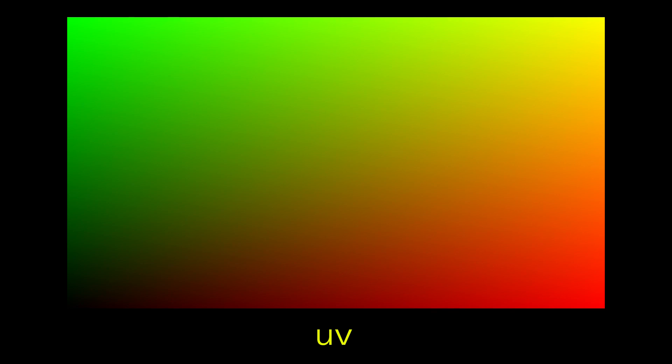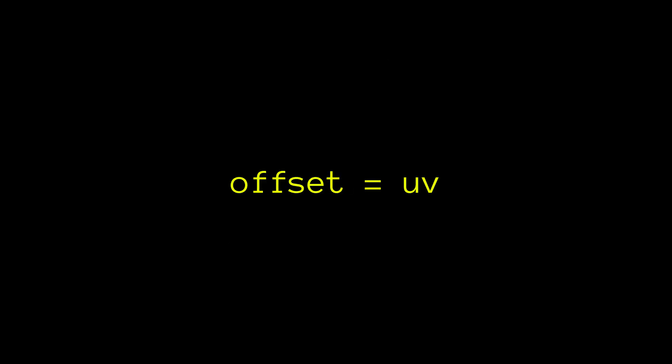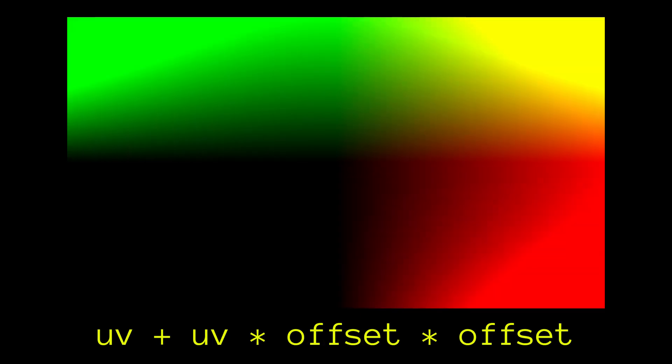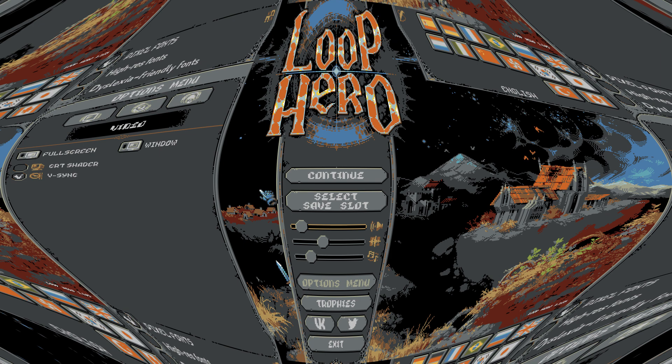We start by converting the UV coordinate range to -1 to 1, which functionally centers the coordinates. Then we create an offset value which will control how much warping occurs. This value is calculated by taking the UV coordinates and dividing them by a curvature value — the higher the curvature value, the less curvature there is. Finally, we add to the UV coordinates by the coordinates times the squared offset value, and then we convert the range back to 0 to 1 so that we can sample the texture properly.